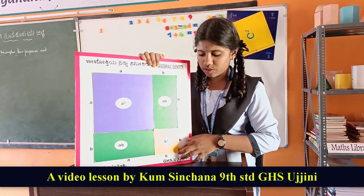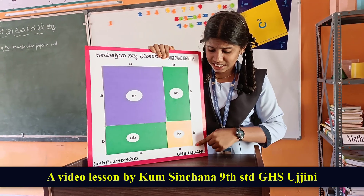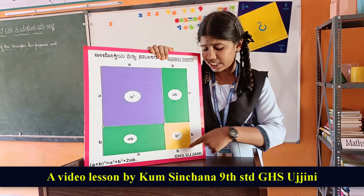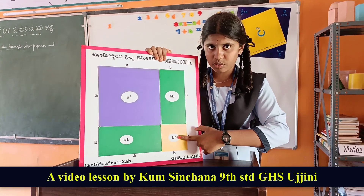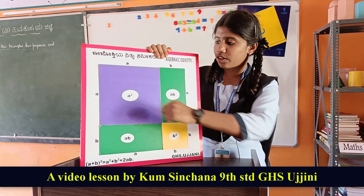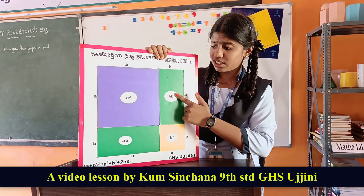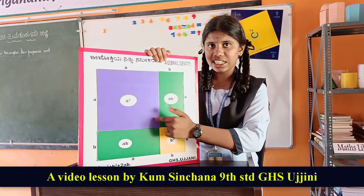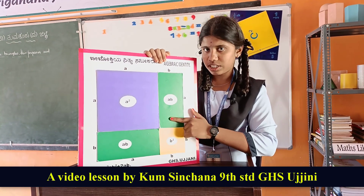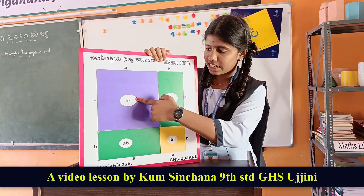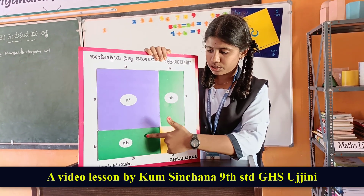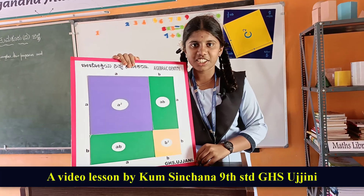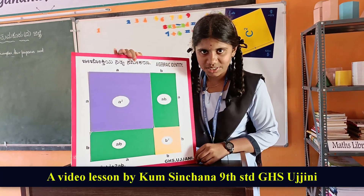There is a b² square: one side is b and another side is b, so b into b is b². Now combining: a² plus 2ab plus b². So a² plus b² plus 2ab. That's all, thank you.